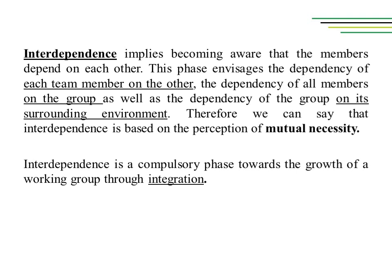The next phase and the path towards the creation of a working team is interdependence, which implies becoming aware that the members depend on each other. Within the framework of interdependence, a working team starts to take shape in what Italian sociologists call groupship, which describes an entity different from a mere assembly of individuals, followed by leadership. This phase envisages the dependency of each team member on the other, the dependency of all members on the group, as well as the dependency of the group on its surrounding environment.